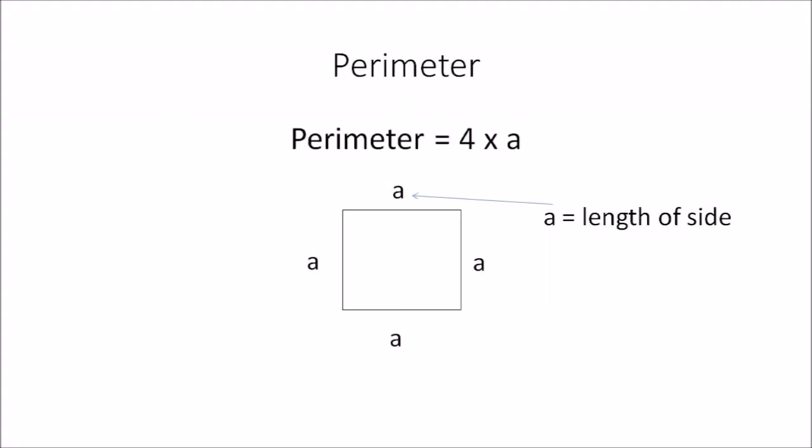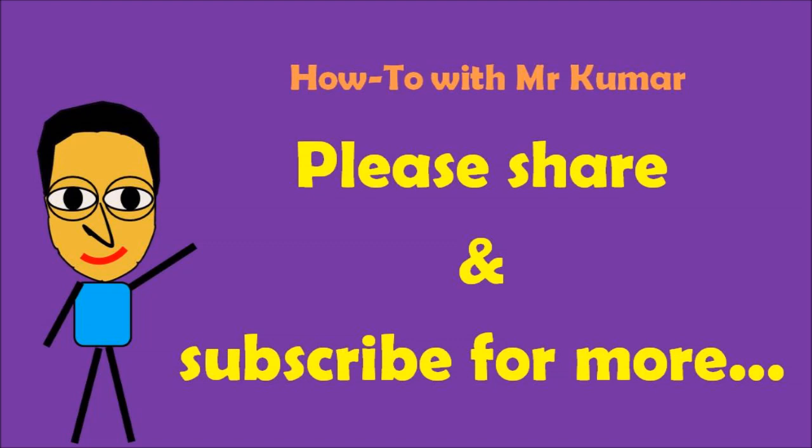And that's how easy it is to calculate the perimeter of a square. The formula is: perimeter equals 4 multiplied by a, where a is one of the side lengths of a square. You can also use this formula in reverse if a perimeter is given and you need to find one of the side lengths. Thank you very much for watching — if you did like the video, please share and subscribe for more.